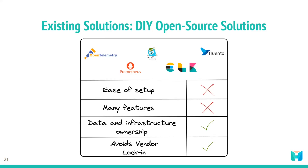While open source observability tools offer many advantages such as data ownership and cost savings, deploying and managing these tools can be significantly more complex than commercial solutions. Piecing together various observability tools in order to collect, process, store, and visualize telemetry data can require substantial time and expertise. This may not be feasible for smaller development teams. The complexity involved in this process is abstracted away with commercial solutions.